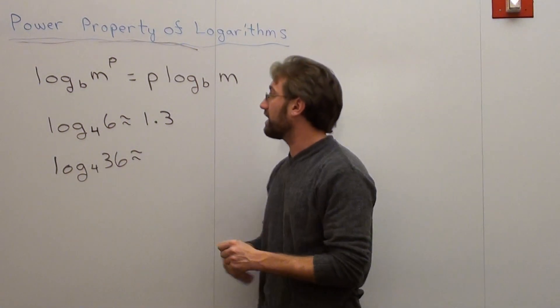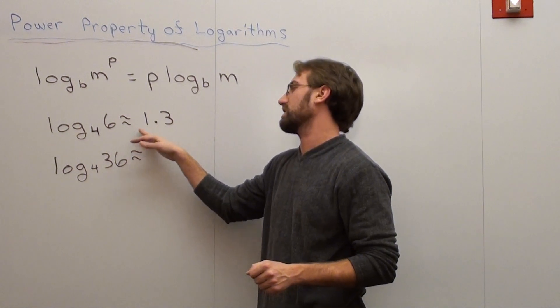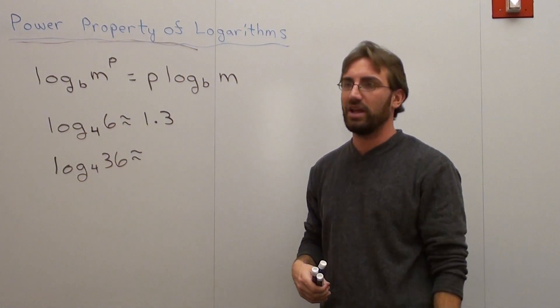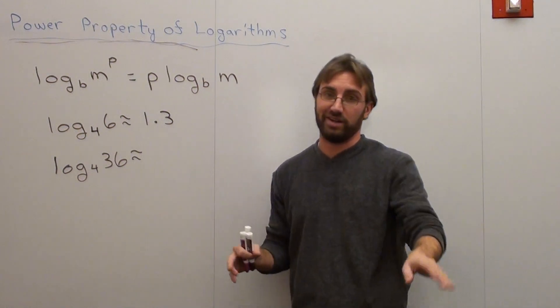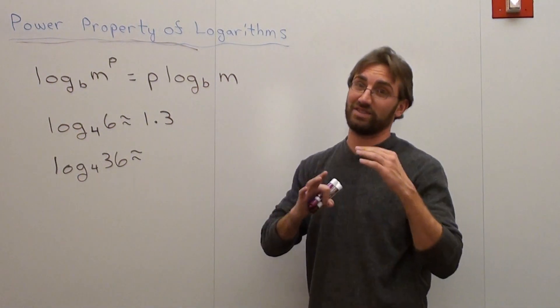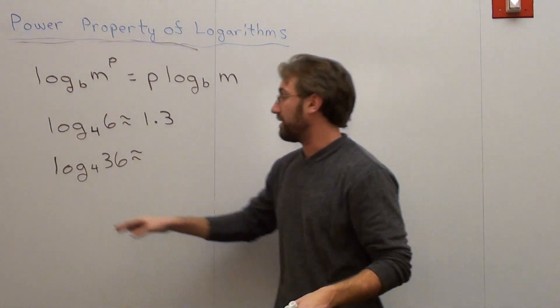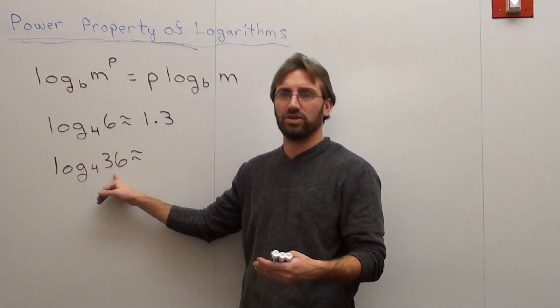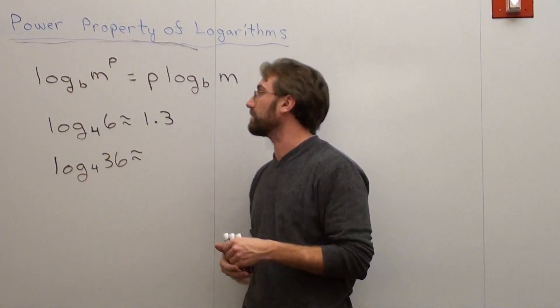So here we go. I've got a log base 4 of 6 is approximately 1.3. It's actually 1.295 something, but I didn't want to sit there and multiply later on, so I just made it 1.3 because that's very easy for me. And I want to figure out what the log base 4 of 36 is.